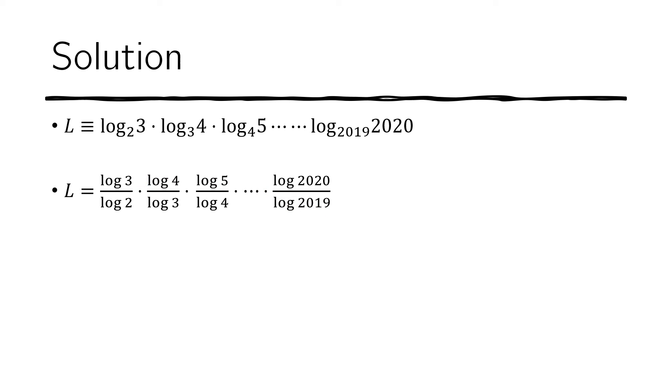Now we notice that when written this way, this bit here cancels with this bit. This bit cancels with this bit. And that continues until log of 2019. So we are left with two terms, this bit and this bit. And so our expression now becomes this one here. And again, we use the identity to reduce it to the following expression.